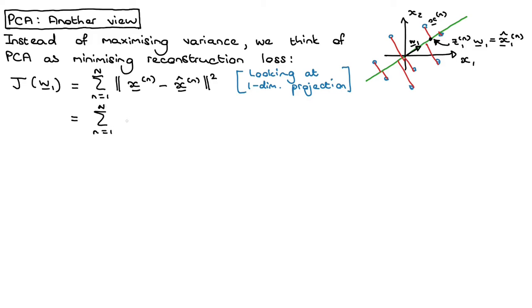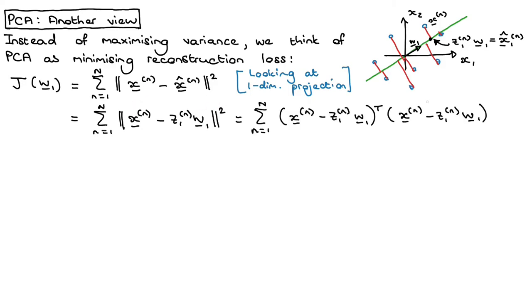From the previous videos we know we can write this as the sum over all items of xn minus z1n times W1, all squared. We can use a trick where the squared Euclidean distance — the squared norm of some vector — equals the transpose of that vector multiplied by itself. Let's just make sure the shapes pan out: this thing is a d-by-1 vector, this is a 1-by-d vector, so the result is a 1-by-1 scalar, which makes sense because it's a distance.